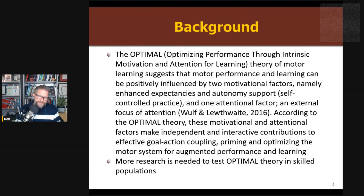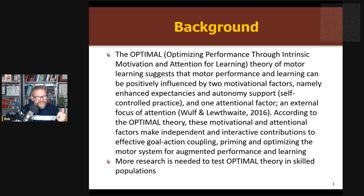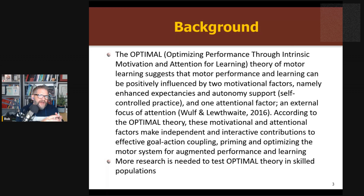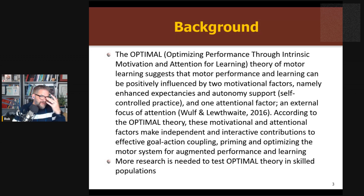For those that don't know, optimal theory is a theory proposed by Gabby Wulf and Rebecca Lewthwaite — I have a whole episode interviewing them you can go back and find. It basically stands for Optimal Performance Through Intrinsic Motivation and Attention for Learning. Learning can be influenced by two factors: enhancing expectancy and autonomy support. Expectancy is the feeling like you're going to be successful, manipulated through illusions and things like that in the golf studies. Autonomy support is letting you have some choice in the matter, controlling your own practice. And then the third component is attentional — Gabby's long history of work on external focus of attention. These things have their own independent contributions: you learn better with enhanced expectancy, with more choice and autonomy, and with external focus. But they also have additive effects — when you have two of the things together, it's going to give you a bigger effect than one alone.